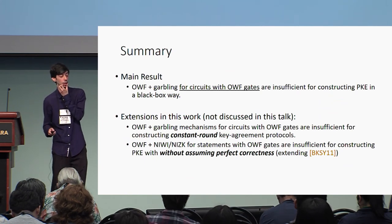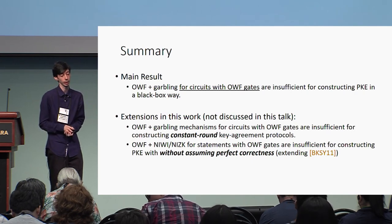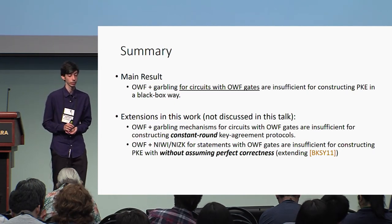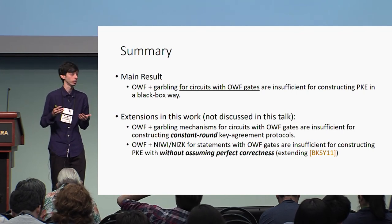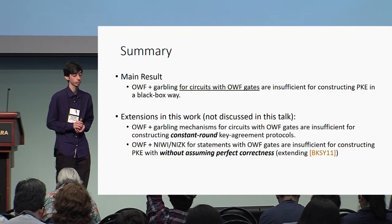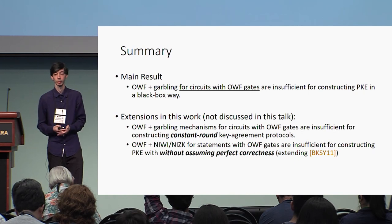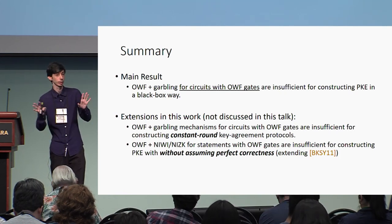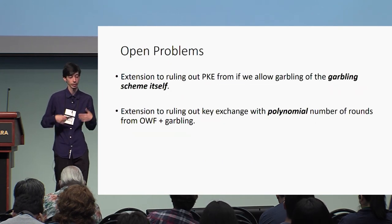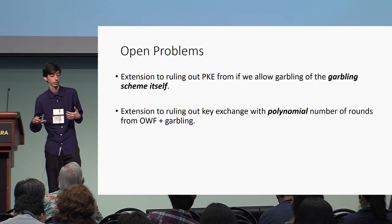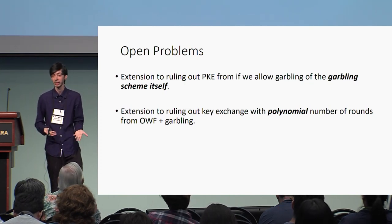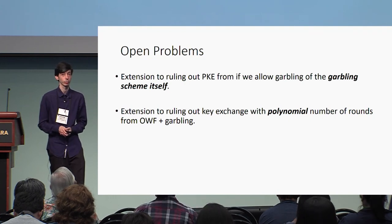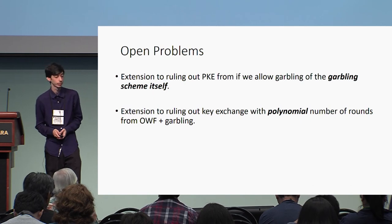To summarize, our main result says that one-way function plus garbling for circuits with one-way function gates are insufficient for constructing PKE in a black box way. Extensions not discussed in this talk include ruling out even constant-round key agreement protocols, and extending the work of Bukersky et al. to show that one-way function plus NIZK with one-way function gates is not sufficient for constructing PKE without assuming completeness. Open problems include ruling out PKE even if we allow garbling of the garbling scheme itself—which falls under the monolithic model—and ruling out key exchange with a polynomial number of rounds from one-way function plus garbling. Thank you.